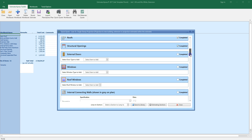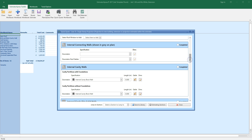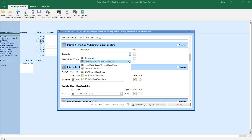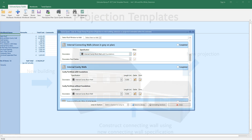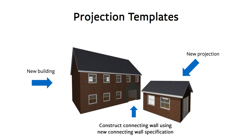Now let's tell QuickQuote what we want to do with the connecting wall between the new extension and the projection. I'm going to select internal cavity block wall with foundations from the downstairs drop down box. QuickQuote will automatically construct the connecting wall using the new specification. In this case, it will replace the brickwork of the external leaf with blockwork. What's more, QuickQuote will plaster and decorate the external side of the wall if you've selected those options at the top of the QuickQuote template.